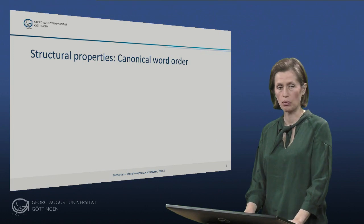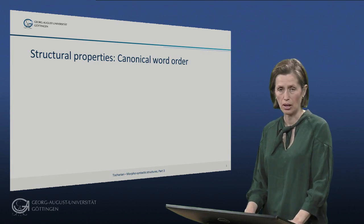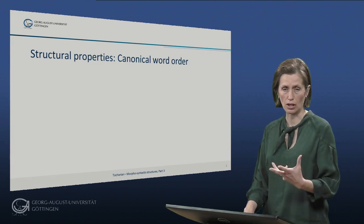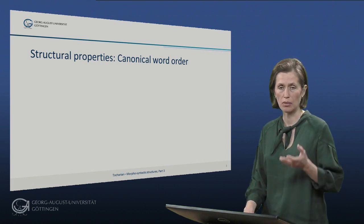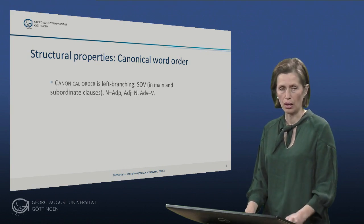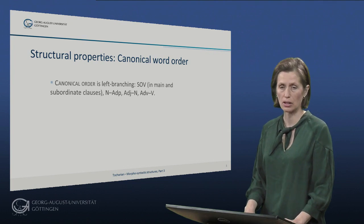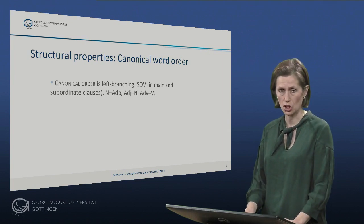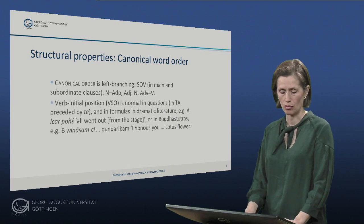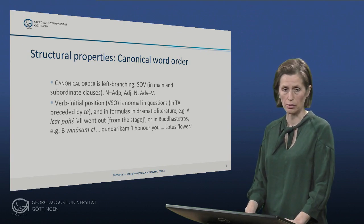As I said earlier in this lecture, the word order in phrases as well as the constituent order of sentences and clauses in Tocharian is free. By free I mean that it can be heavily changed and reorganized in contrast to the canonical or normal word order. This occurs most frequently in metrical texts but also in prose texts. The canonical order in Tocharian is mainly left-branching. It's SOV both in main and subordinate clauses, with adjective-noun and adverb-verb ordering. However, verb-initial position is normal in questions, and in Tocharian A it is preceded by the particle T.